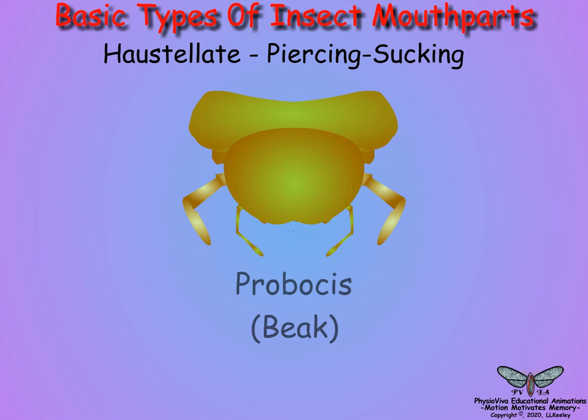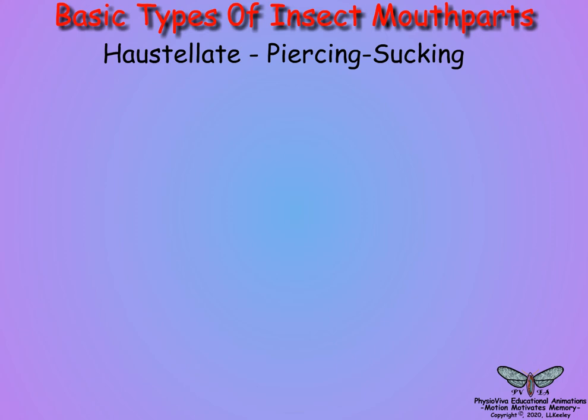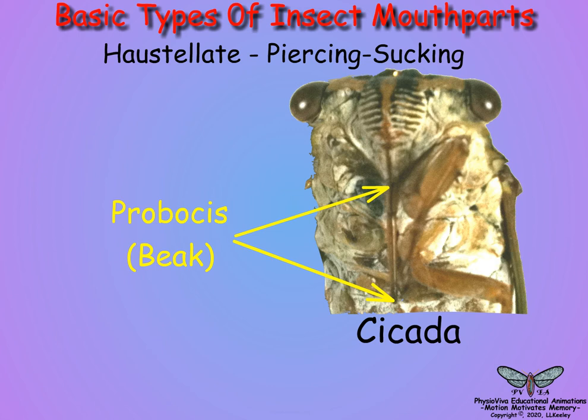Haustellate species have developed the basic chewing mouthparts into an elongate piercing-sucking structure called a proboscis, or beak, that allows them to scrape or probe the outer covers of animals or plants and suck or lap fluids such as blood or sap. Here is a close-up view of the details of a cicada beak to illustrate a typical haustellate proboscis.